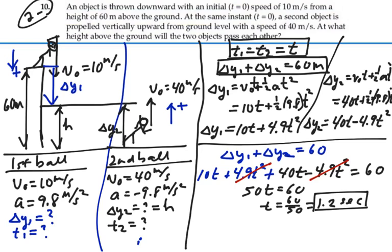But the question was, what was the height above the ground where the two passed each other? We just found the time it took for either ball to get to that point, either from the ground or from the 60 meters up. But we want to find the height above the ground.